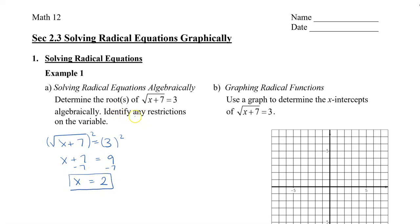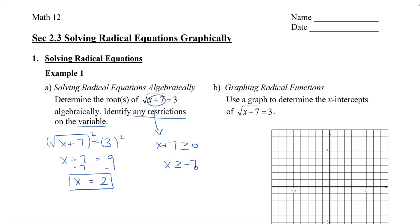It also says to identify any restrictions on the variable. We look at the inside of the radical, which is x plus 7. I know that I can only square root positive numbers, so x plus 7 must be greater or equal to 0, which means x has to be greater or equal to negative 7.